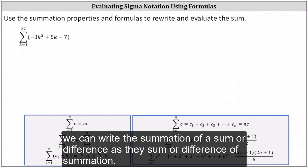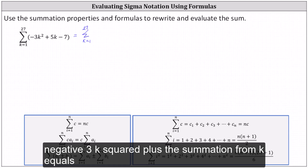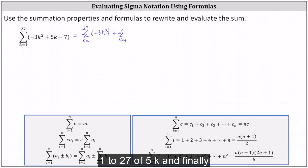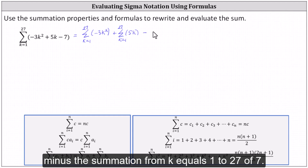To begin, we can write the summation of a sum or difference as a sum or difference of summations. The given summation is equal to the summation from k equals one to 27 of negative three k squared, plus the summation from k equals one to 27 of five k, and finally minus the summation from k equals one to 27 of seven.